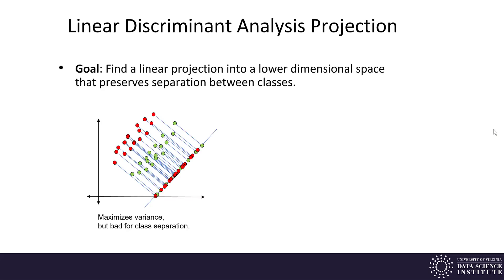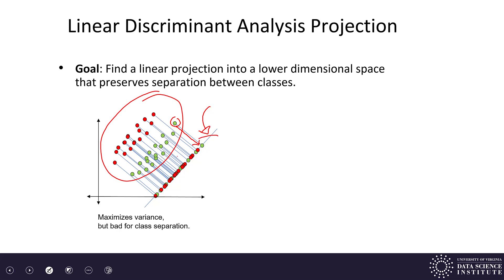Let's talk about what we mean by projection and what would happen projecting in different directions. Here I have a red class and a green class in my data set, and I'm looking at a projection onto a line. For projection, you take each point in your data set, follow the line perpendicular to the projection line, and that tells you where that point will be after projection.